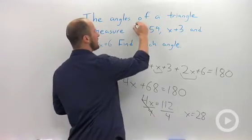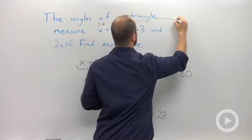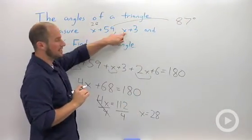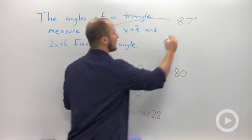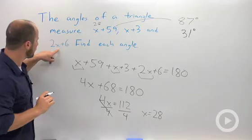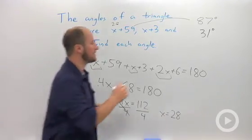So plugging 28 in over here: 28 plus 59 gives us 87. 28 into here: 28 plus 3 is 31. And then plugging 28 over here: 28 times 2 is 56, plus 6 is 62.